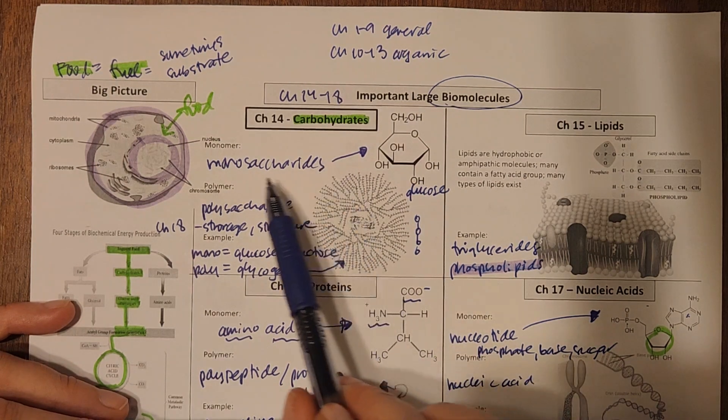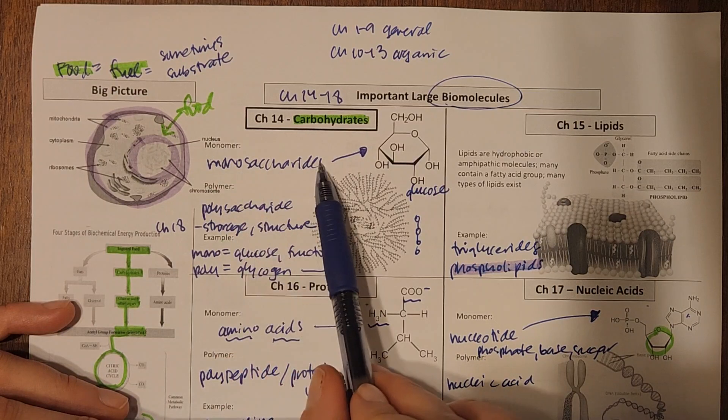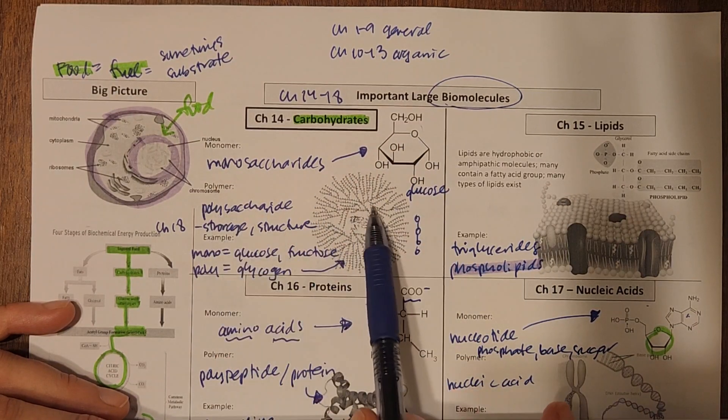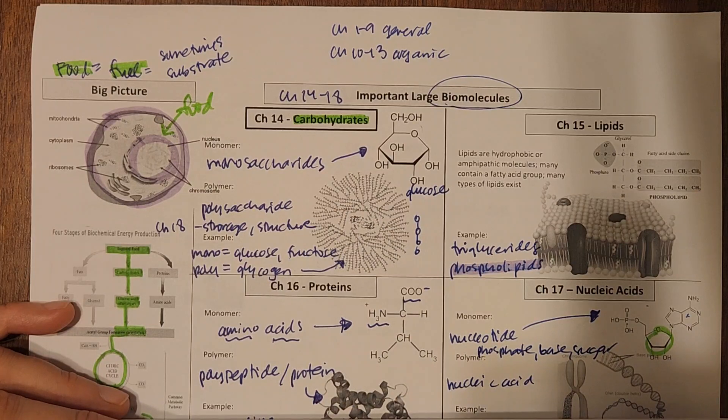So we started off this chapter by talking about the monomers, monosaccharides, and the polymers, polysaccharides that we see in carbohydrates.